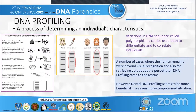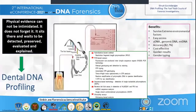The samples obtained for DNA profiling are then matched with associated reference samples for confirmation. In a number of cases where human remains were beyond visual recognition and for retrieving data about the perpetrator, DNA profiling came to the rescue. However, dental DNA profiling seems to be even more beneficial in further compromised situations. Dental DNA profiling is not a very commonly used method in India, but physical evidence cannot be intimidated — it does not forget. It sits there and needs to be detected, preserved, evaluated, and examined.